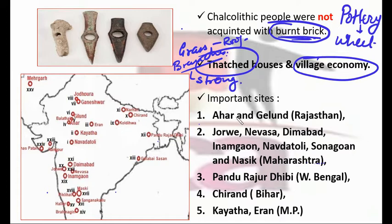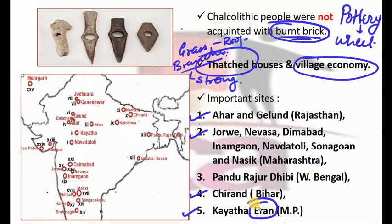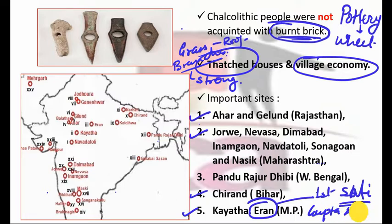The important Chalcolithic sites are: Ahar and Gilund in Rajasthan; Jorwe, Nevasa, Daimabad, Inamgaon, Navdatoli, Son Gav, and Nasik in Maharashtra; Pandu Rajar Dibhi in West Bengal; Chirand in Bihar; and Kayatha and Eran in Madhya Pradesh. Eran is a site in MP where we get the evidence of the first Sati practice, found during the Gupta age. We will go through that as well.